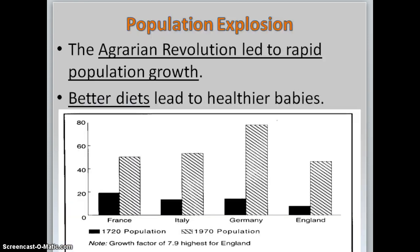Because of the Agrarian Revolution, the population exploded. Better diets led to healthier babies, which led to people living longer. From 1720 to 1970, there was an increase of around 60 million people living in these countries — that's a lot of new mouths to feed.